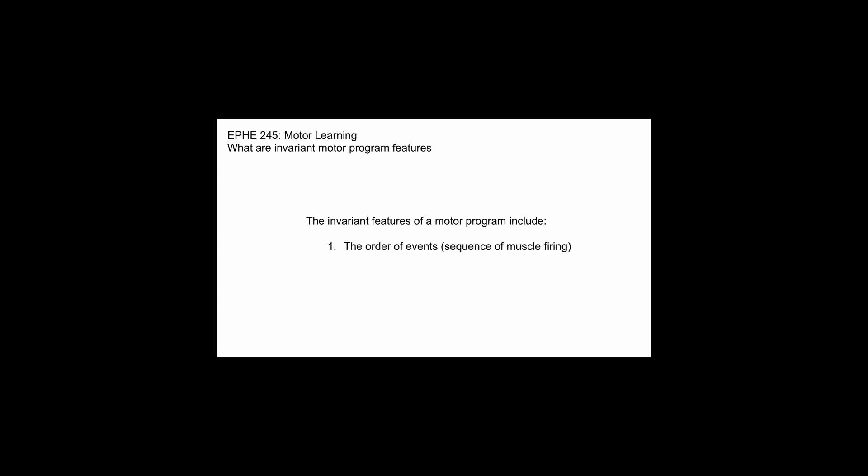What are invariant motor program features? Invariant motor program features are the aspects of the motor program that do not change trial to trial. The invariant motor program features include the order of events — the sequence that the muscles fire in. With a given sports skill, the order that the muscles are activated is constant each time you repeat the skill and does not change, hence it's an invariant feature.